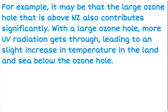For example, that large ozone hole that's over New Zealand. If that is a large enough hole that lets more UV radiation in, that increases the temperature on the land and sea below the ozone, therefore reducing the surface area of sea ice.